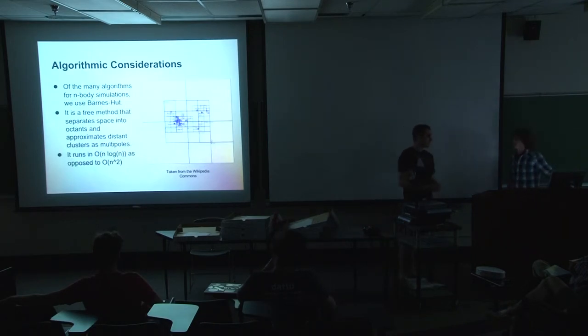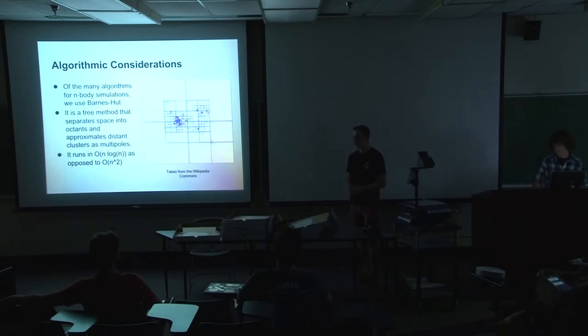So the algorithm we use for this is Barnes-Hut. It's an octree-based force computation algorithm. If you do a direct summation of all the forces, it would be like n-squared runtime, because you have to calculate for every single possible pair of particles. So what the Barnes-Hut algorithm does is it approximates particles that are a sufficient distance from the one you're currently calculating. So it reduces the complexity to n-log n. So for 100,000 particles, it makes it feasible to actually do a 4 billion year simulation.